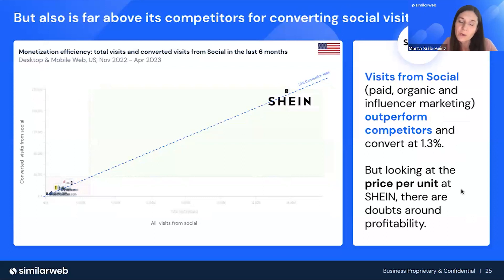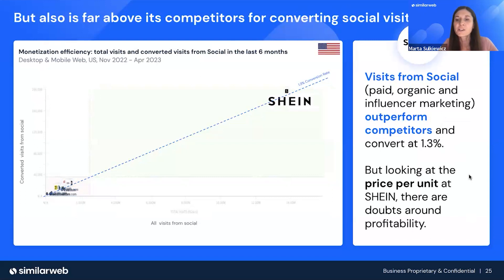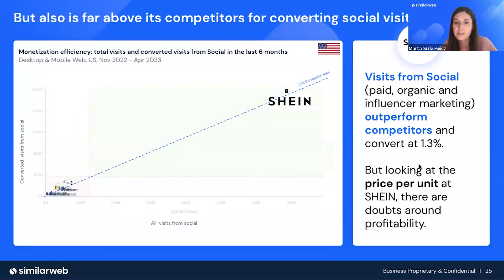This slide shows converted visits from social media — with a slightly lower conversion rate, because many of the social media investments here, aggregated across paid, organic, and influencer marketing, result in branded search rather than direct conversions. But still, Shein is doing the best job compared to anybody else in their competitive environment.